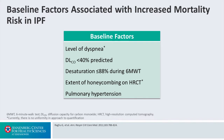There are various factors associated with increased risk of mortality in patients with IPF. Baseline factors that can be associated with increased risk of mortality include the level of dyspnea — the lower the diffusing capacity, the worse the prognosis. The more the patient desaturates, the worse the prognosis.